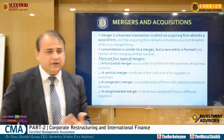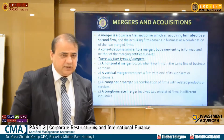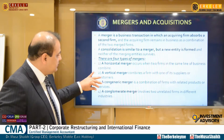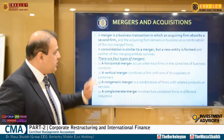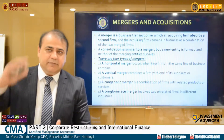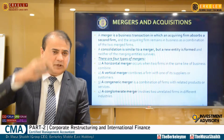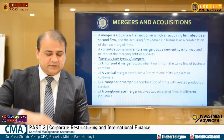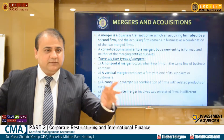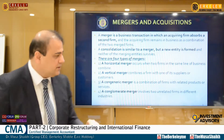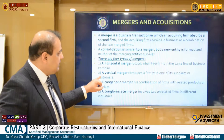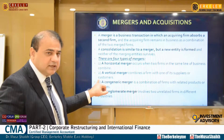There are four types of mergers: horizontal, vertical, congeneric, and conglomerate. Horizontal means two same-size entities acquiring each other — when two firms in the same line of business combine. Vertical means a bigger company takes over a smaller company, or a firm combines with its supplier or customers — going up or down the supply chain.